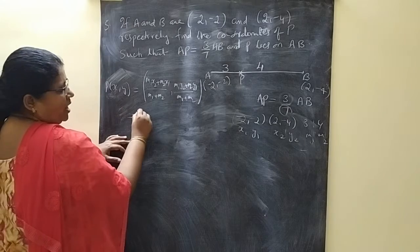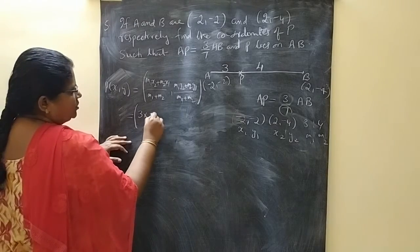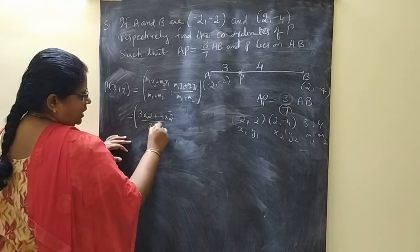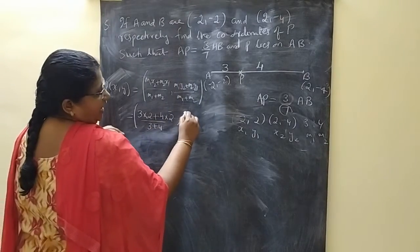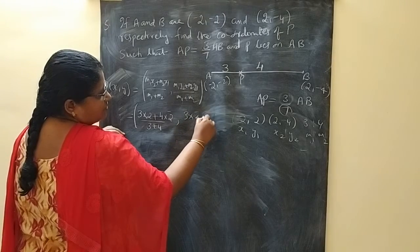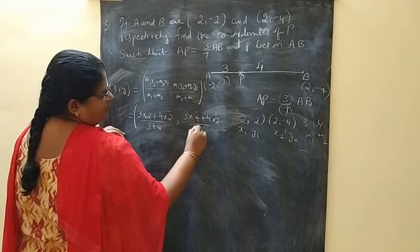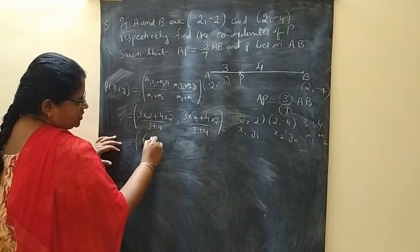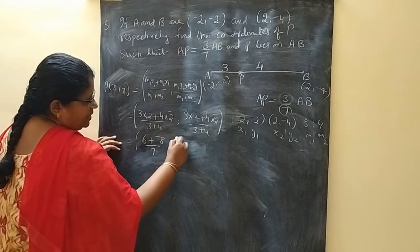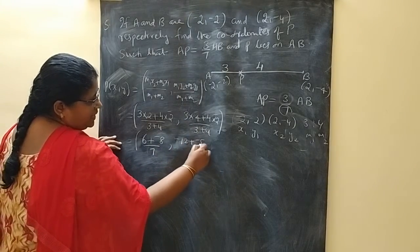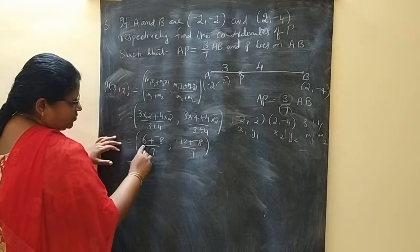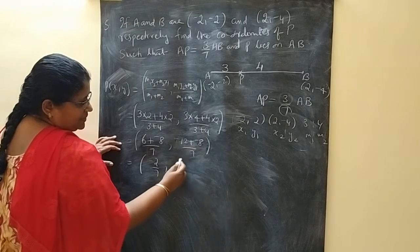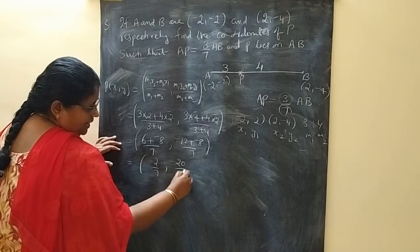Then substitute: M1 means 3 into X2 is 2 plus M2 4 into X1 minus 2 by 3 plus 4. M1 3 into Y2 minus 4 plus 4 into minus 2 by 3 plus 4 is equal to 3 into 2 is 6 plus minus 8 by 7, minus 12 plus minus 8 by 7. This is equal to 6 plus minus 8 is minus 2 by 7. Minus 12 plus minus 8 is minus 20 by 7.